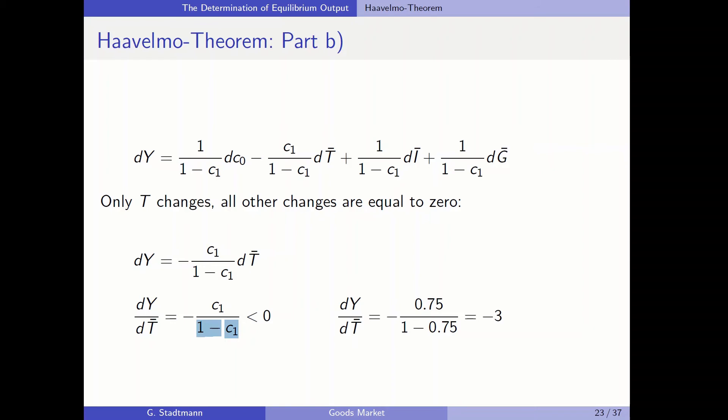Let's combine part A and part B. In part A we learned that when the government increases government spending by one unit, GDP is up by four units. In part B we learned that when the government increases taxes by one unit, GDP decreases by three units. When we combine these two effects, when the government increases government spending and finances this by an increase in taxes, the net effect should be equal to one. This is the so-called Haavelmo theorem, which we'll derive in part C.